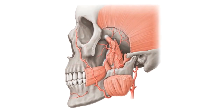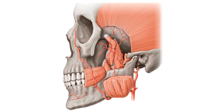This structure supplies the deep structures of the face and right now we're looking at it from a lateral left lateral view. As you can see, this is going to be the maxillary artery that we're going to be talking about. This artery branches off from the external carotid artery just deep to the neck of the mandible.